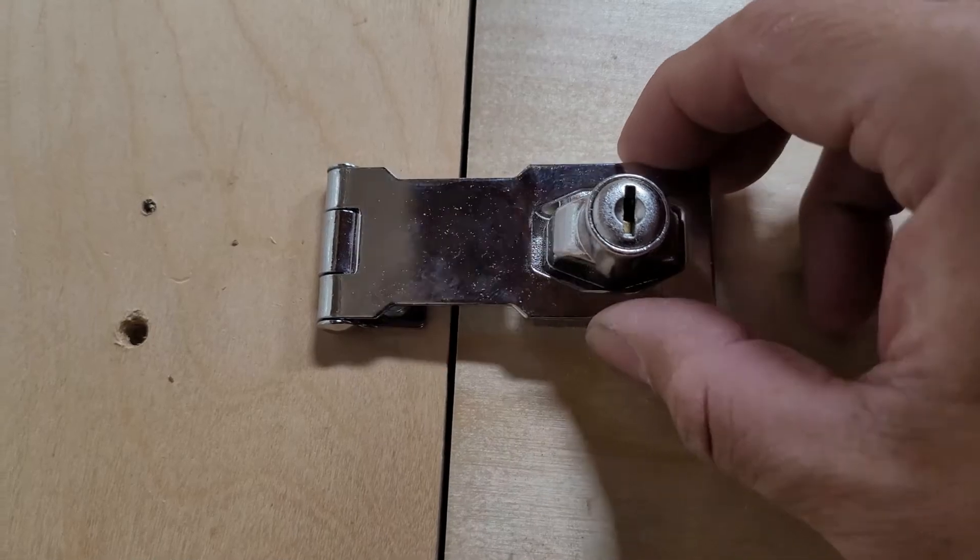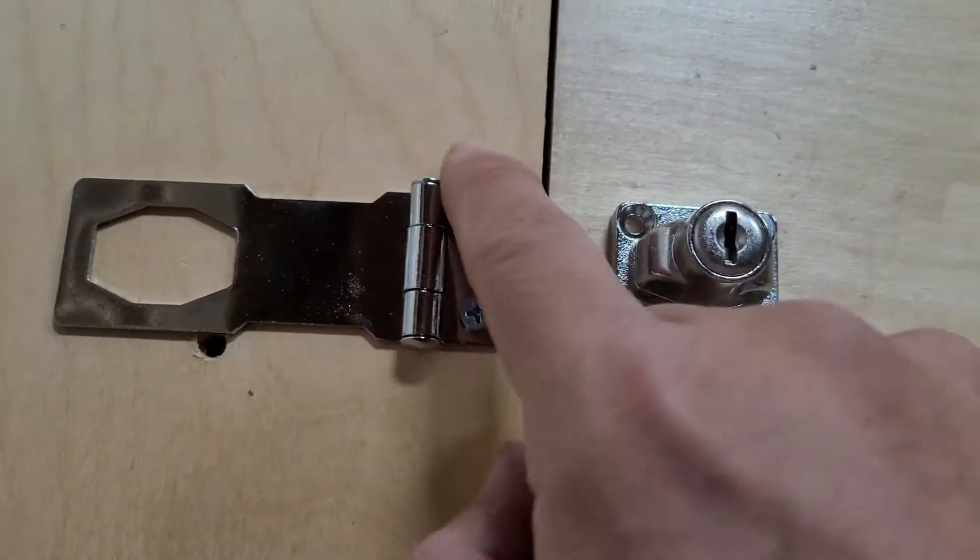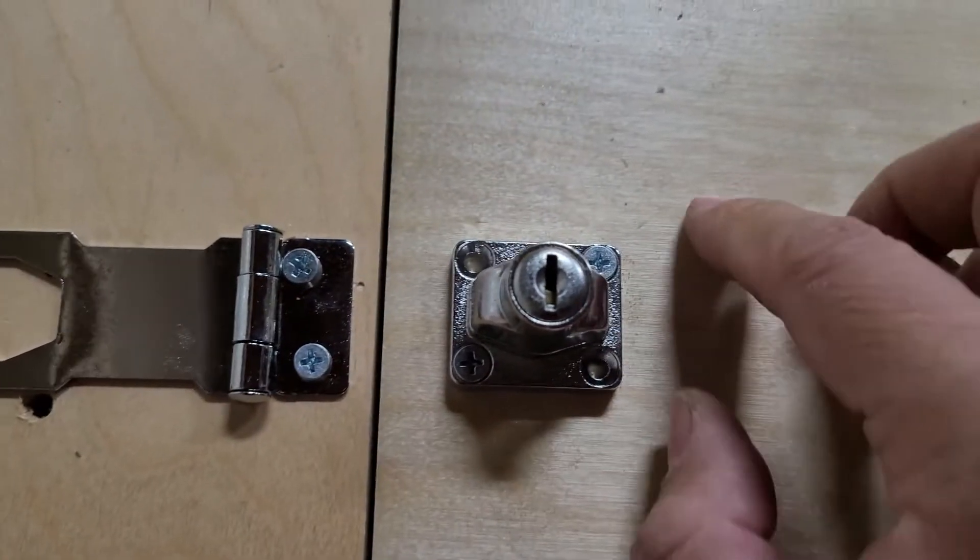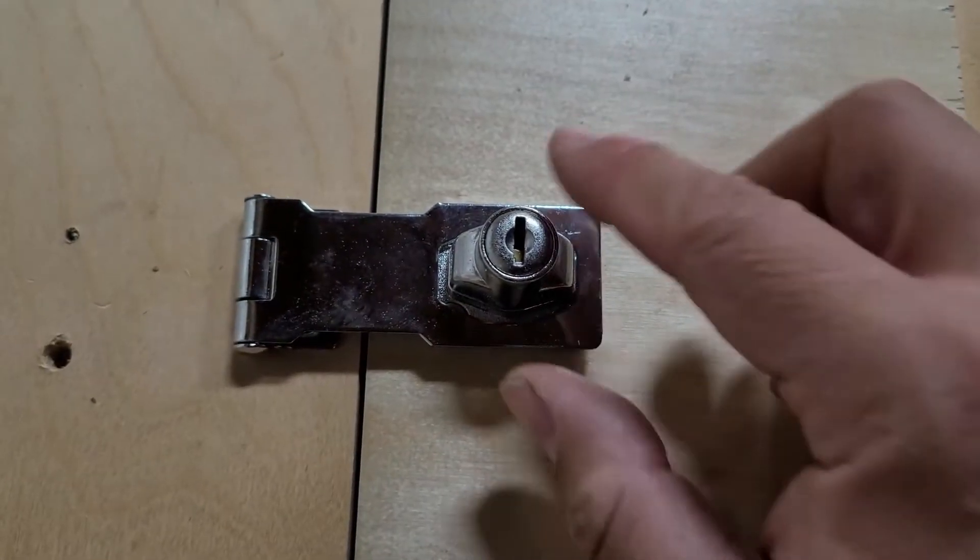Today we're going to install a lock and it's very simple. Two screws on one end, four screws on the other end. It's simple because all you got to do is match it up and lock it in place.